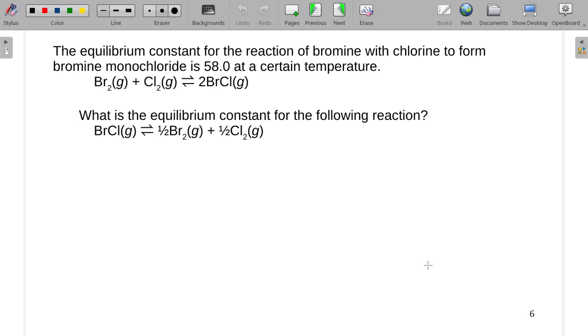The equilibrium constant for the reaction of bromine with chlorine to form bromine monochloride is 58 at a certain temperature. What is the equilibrium constant for the following reaction?